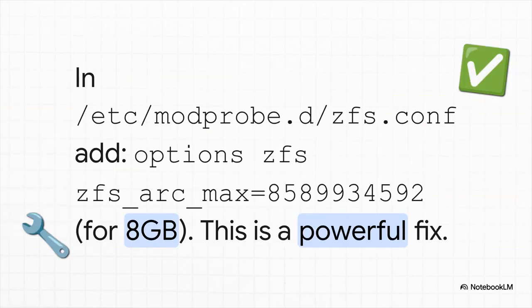Here is an incredibly powerful direct fix. If you use ZFS at all, this is an absolute must-do. Edit one configuration file and add a line to cap the ARC cache — this example sets it to 8 gigabytes. Then reboot, and this one simple change can free up a huge amount of RAM.